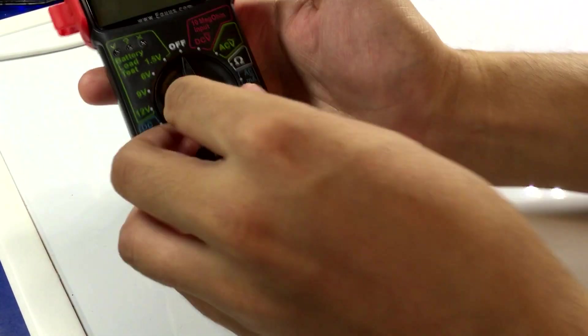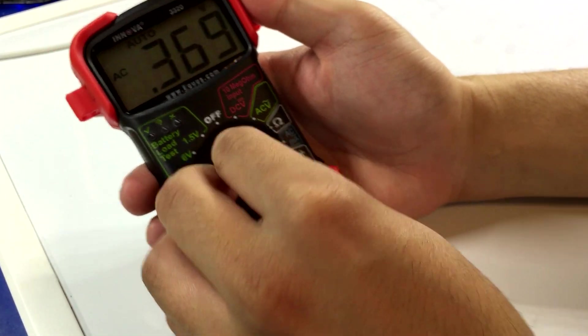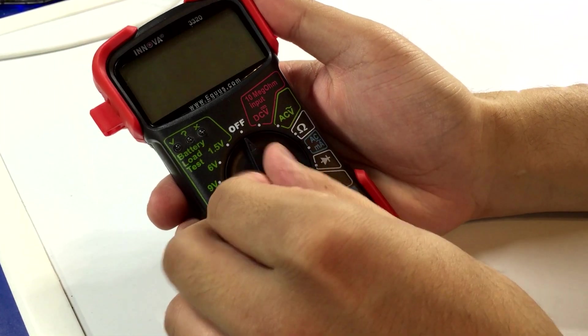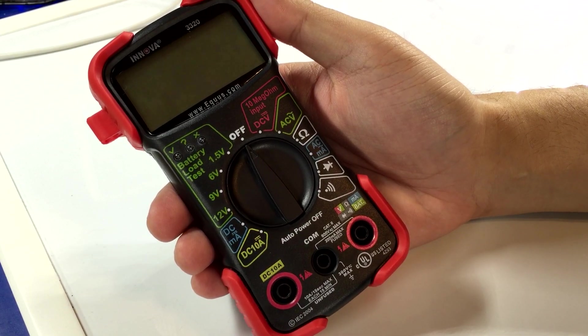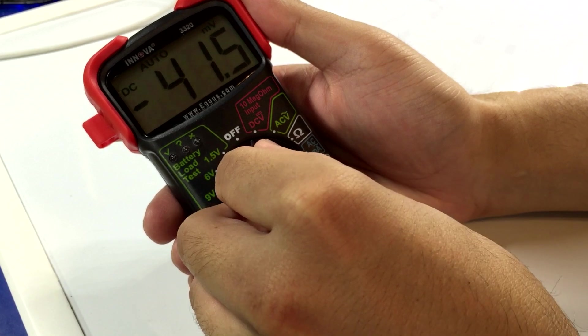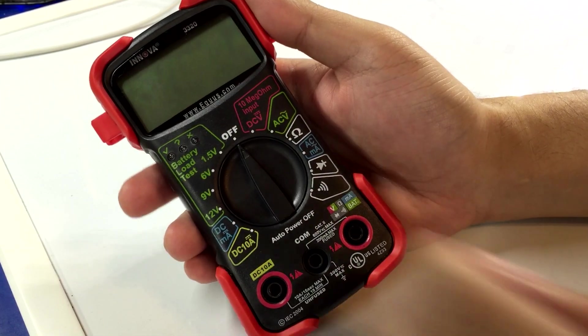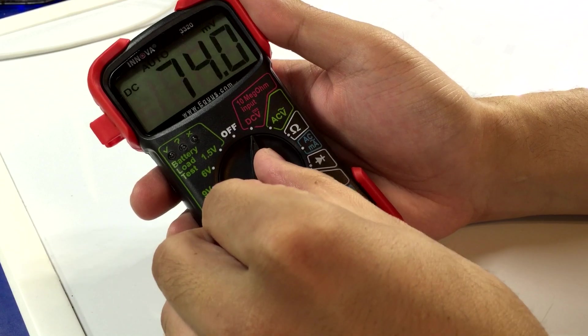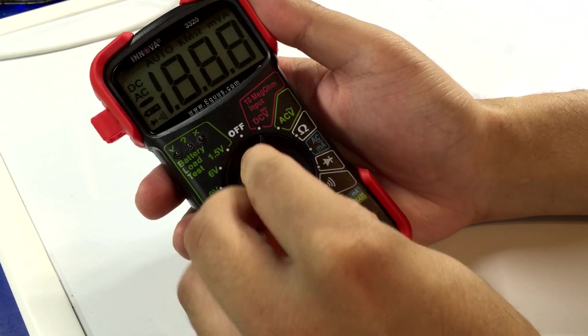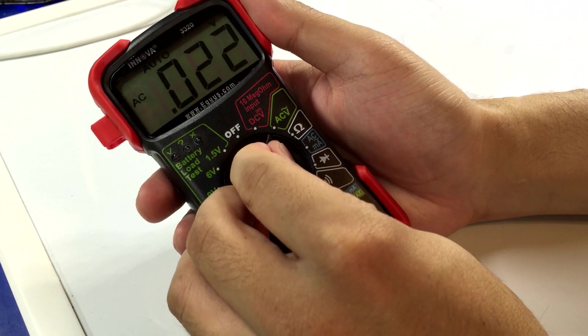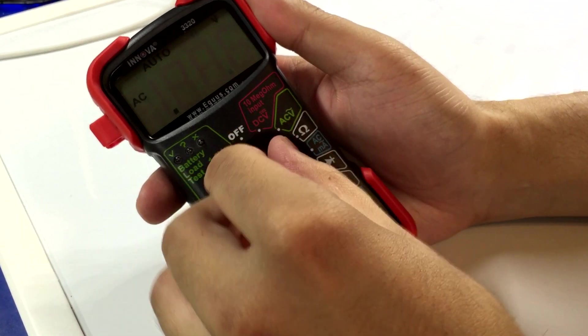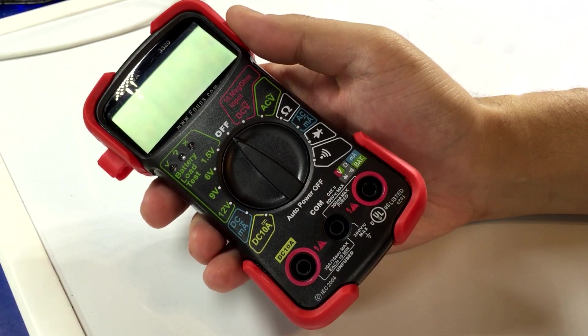Alright, it's time to test the range switch on all the multimeters. So first up, the Innova. It feels okay, maybe slightly on the crappy side. There's not a lot of force pulling it into the next range, so after it gets worn out enough I could see it potentially getting stuck between ranges because this really doesn't take any force at all. I'd say subpar.